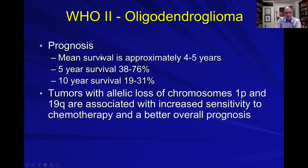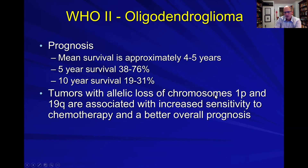Prognosis is similar to the grade two tumor, with median survival being several years. The tumors that have the loss of chromosome 1p and 19q are going to be associated with increased sensitivity to chemotherapy, so they will have a better overall prognosis.